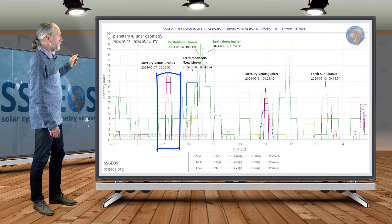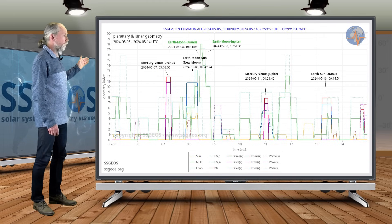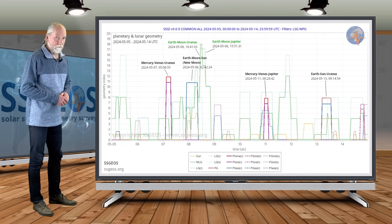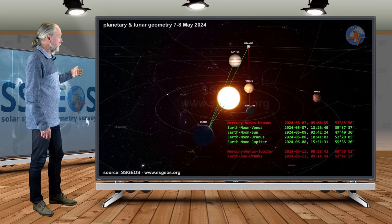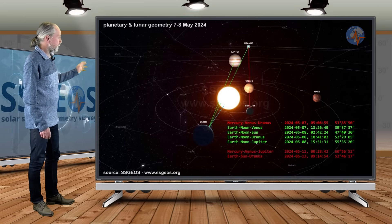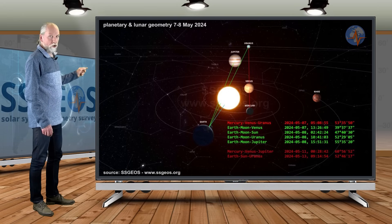This is because of Mercury-Venus-Uranus in conjunction, and it happens early on the seventh. If we look at the solar system, we see this conjunction: Mercury, Venus, and Uranus. We also see a lunar geometry coming up.